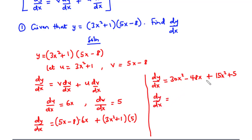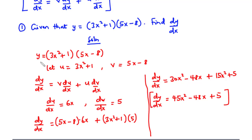Collecting like terms: 30x² + 15x² is 45x², then we have -48x + 5. So the derivative of y with respect to x is equal to 45x² - 48x + 5.